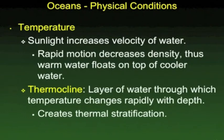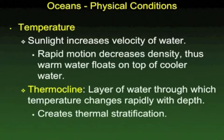Temperature is a very critical condition of oceans. You've probably heard about coral bleaching in the Caribbean and other tropical warm waters, which results in part from increased surface water temperature. Sunlight increases water temperature, causing water molecules to move more quickly, reducing density, and that water floats to the top. This can create a division of warm and cold water with a very quick transition area called a thermocline. This condition can be found in lakes as well as oceans.